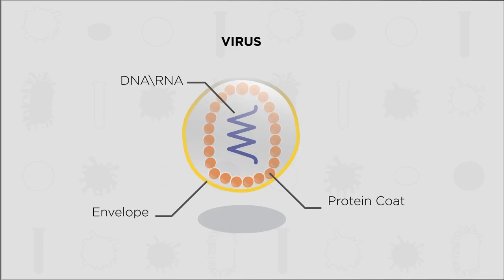Sometimes a membrane called an envelope surrounds a virus particle. This envelope isn't made by the virus, but is actually stolen from the membrane of the host cell. This is a great strategy by the virus, as it makes it harder for the host cell to identify the virus as foreign.